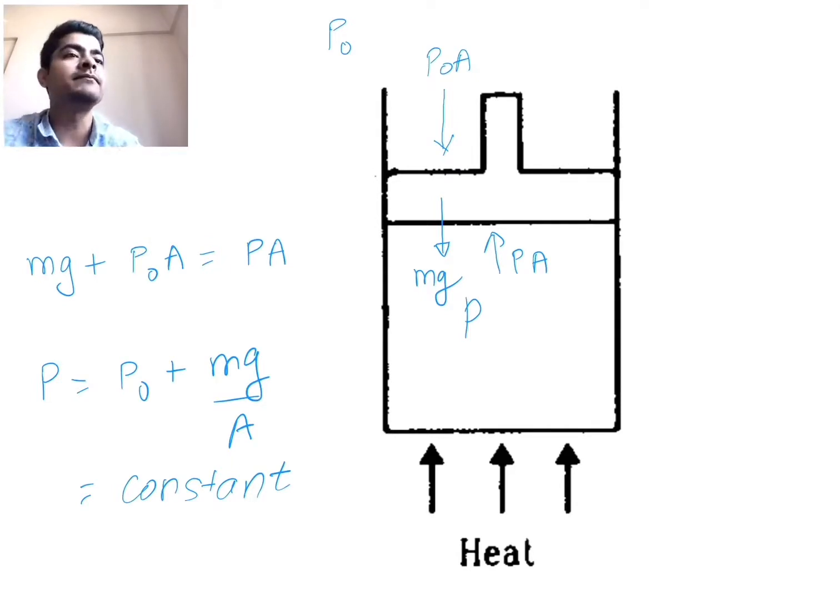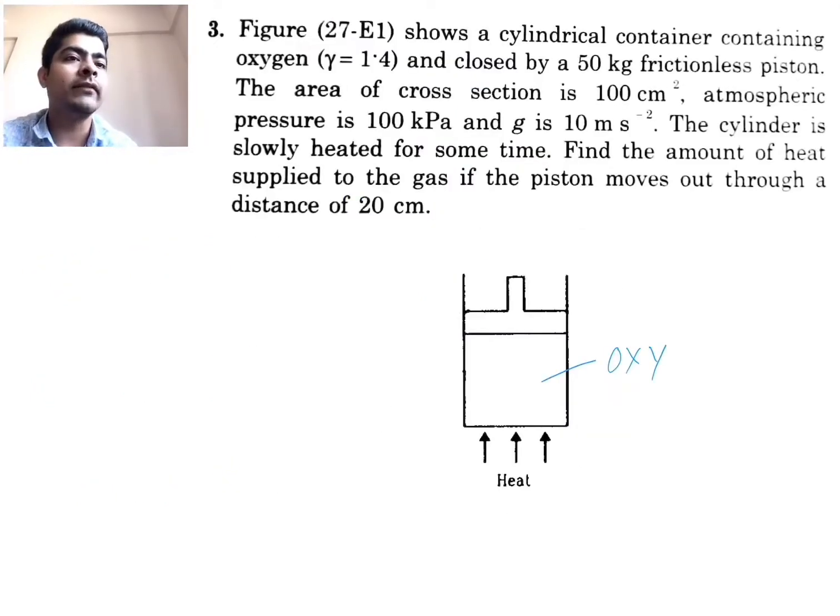Pressure will remain constant. So basically this is a question of isobaric process which is the pressure equal to P0 plus Mg by A. So now it is a very easy question. In the question they have given the distance travelled by the piston is 20 cm. So if you multiply the distance with area, we can obtain the change in volume.